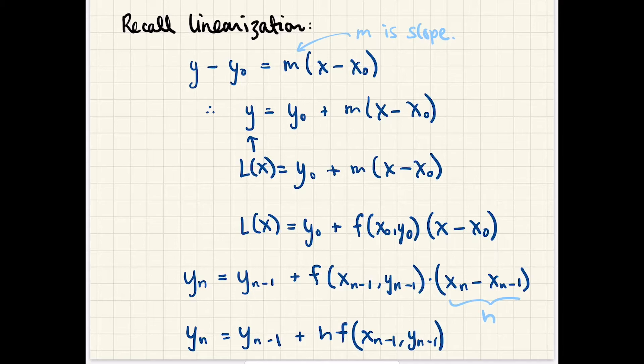So we can see that the next y value is the previous y value plus h times f of the previous x value and the previous y value. And that's Euler's method. That's the numerical method that will generate all of the y values. It's an iterative process. So if you want y₄₈, you're going to have to go and find y₄₇. And if you want y₄₇, you'll have to go and find y₄₆, and so on.